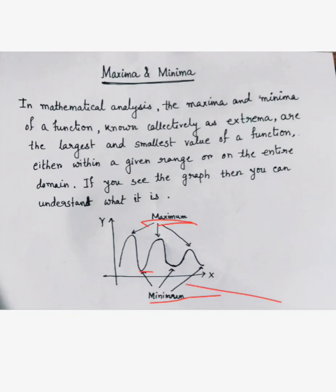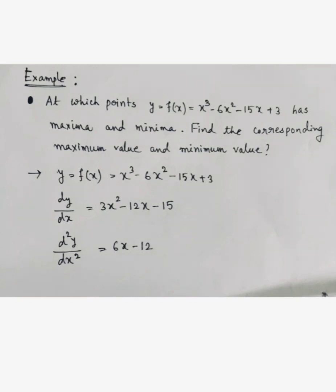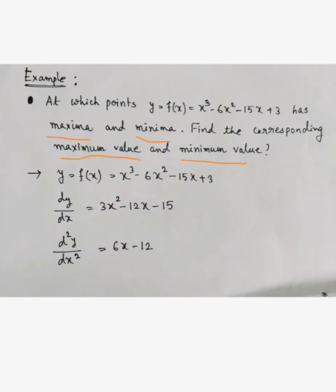Now let us do an example. The given example is: at which points does y = f(x) = x³ − 6x² − 15x + 3 have maxima and minima? Find the corresponding maximum value and minimum value. So we have to find four things: at which point maxima is present, at which point minima is present, and the corresponding maximum and minimum values.